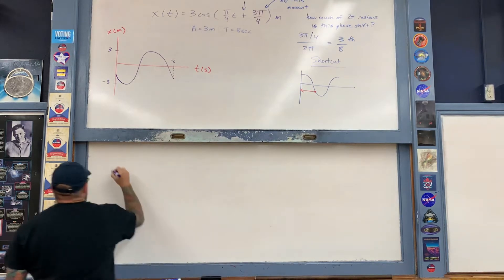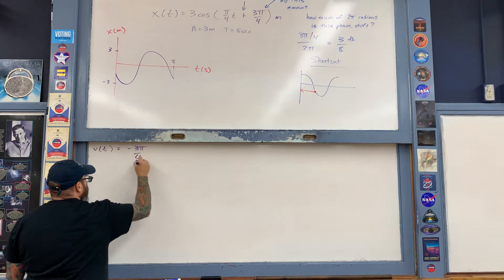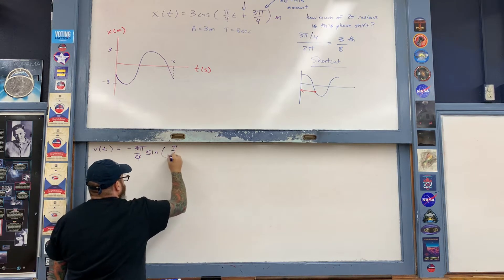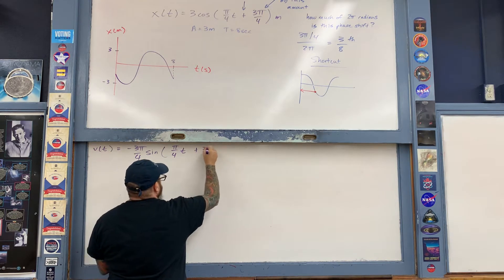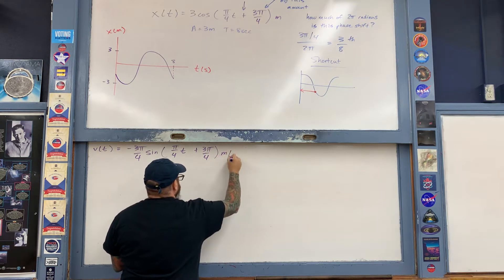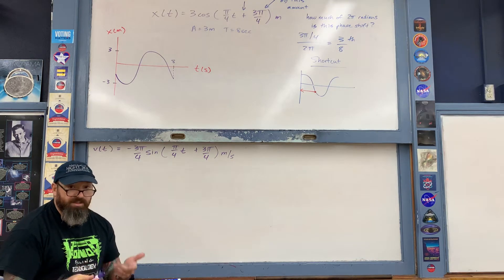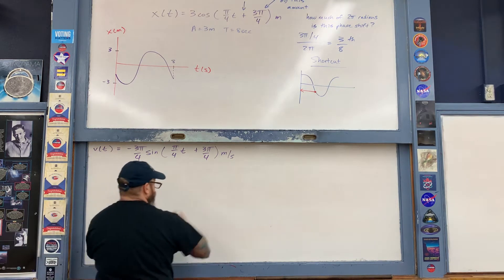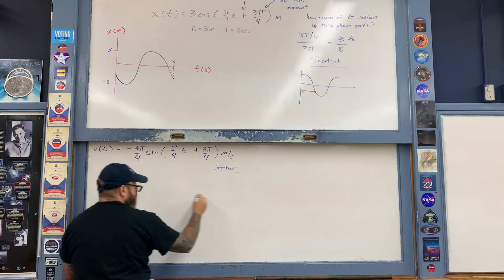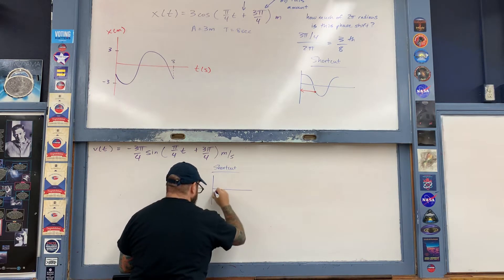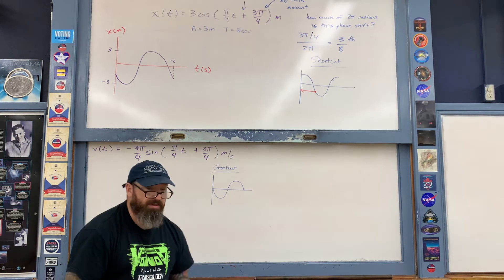Next, we have the velocity equation. Taking a derivative gives negative 3π/4 times sine of (π/4 · t + 3π/4) in meters per second. To graph this, I draw a shortcut graph of a negative sine curve. Once again I need to find where 3/8 of the way is and shift the whole thing to the left-hand side.